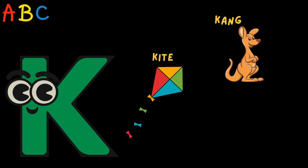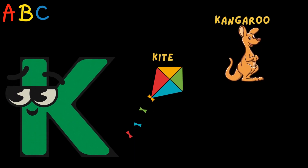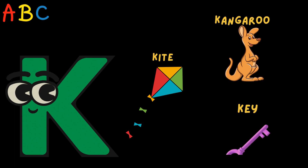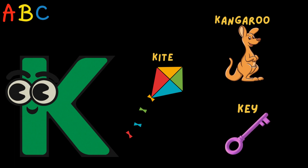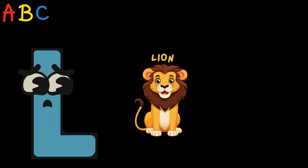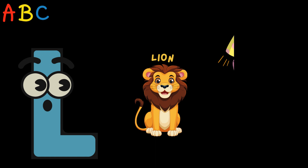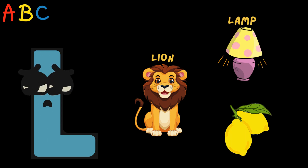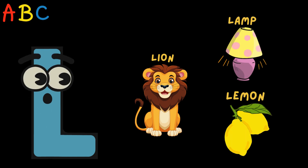K is for Kite, Kangaroo, Key. L is for Lion, Lamp, Lemon.